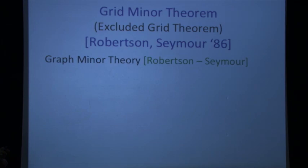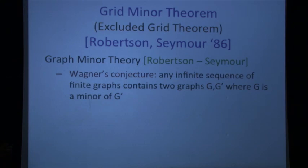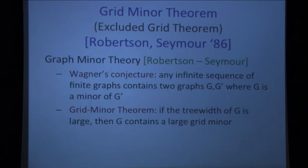The excluded grid theorem came out of the work of Robertson and Seymour on graph minor theory — very deep and fundamental work in graph theory spanning more than 20 papers that took many years to complete. One of the main goals was to prove Wagner's conjecture, which says that in any infinite sequence of finite graphs, there are two graphs where one is a minor of the other.